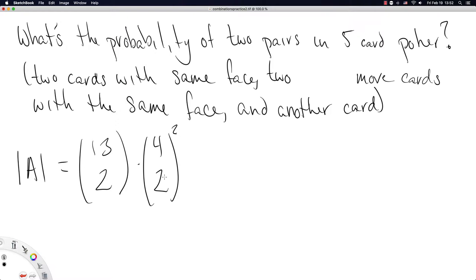That's just four cards—two pairs. So we have 11 available faces remaining and we want to specify one of them. From that face, there are four available cards and we want one of those. We can put this into R to calculate the probability of two pairs in five-card poker.